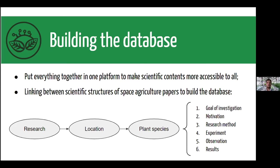We started to provide linking between scientific structures of space agriculture papers to build this database, including research location and separating plant studies by plant species. Each study has a list of outcomes that can be addressed: the goal of investigation, the motivation, the research method, the experiment, observations, and results. For now this summer, we have focused our efforts on the goal of investigation and especially on the results addressed from previous studies.